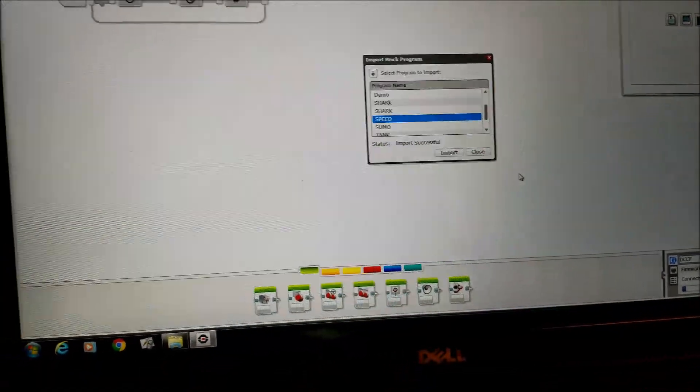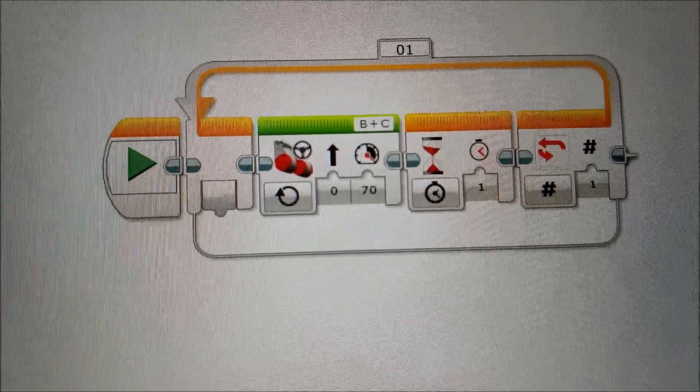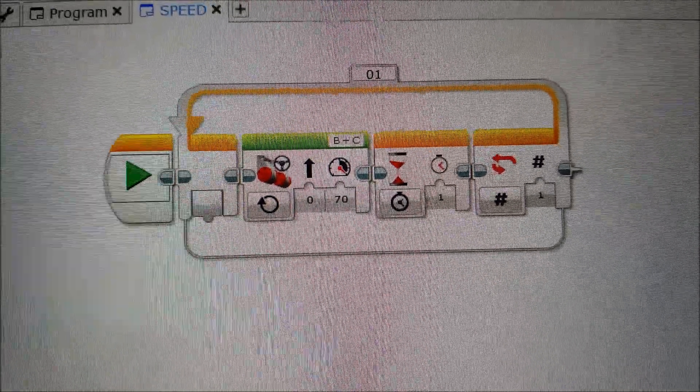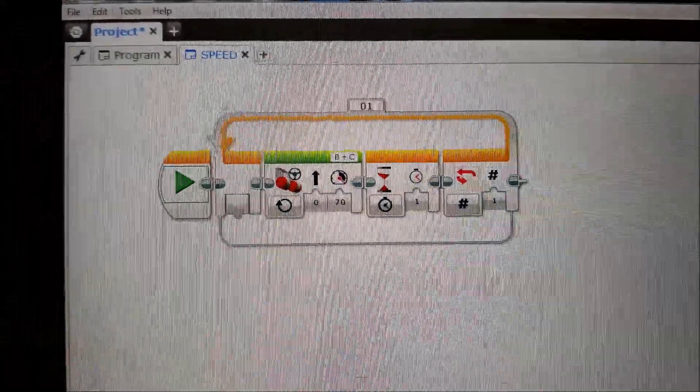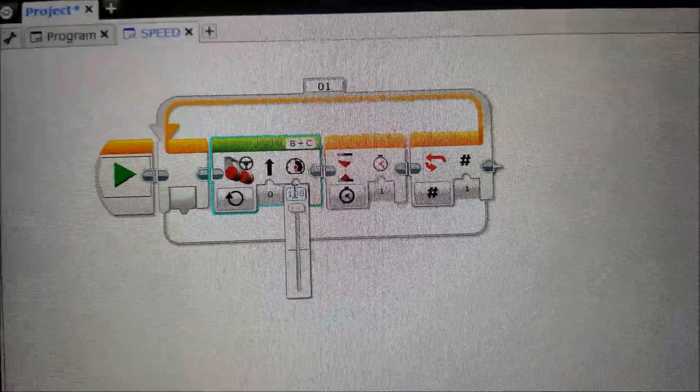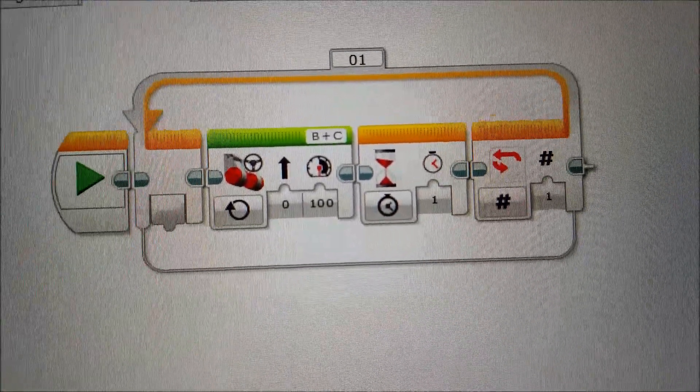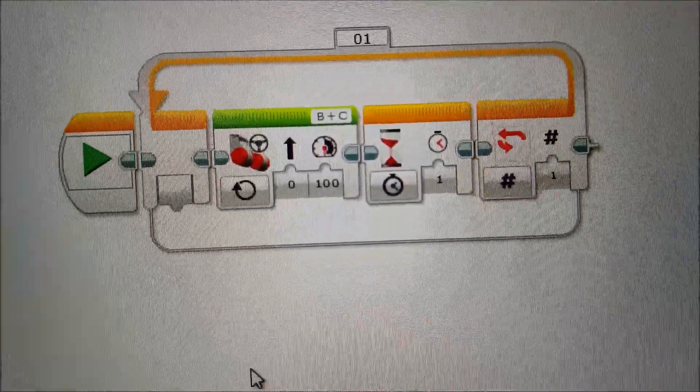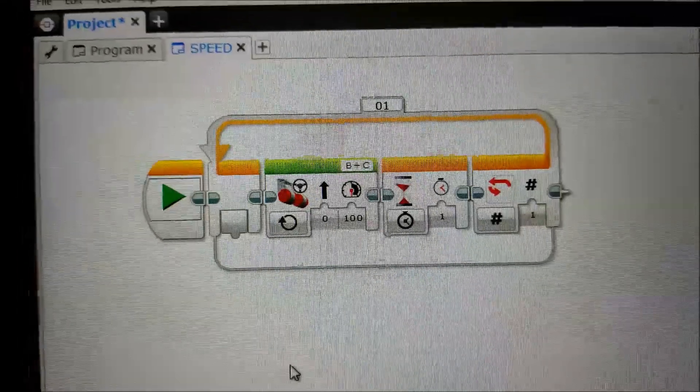Okay, and so there we go, there's the proof that brick speed is only 70%. So what I'm gonna do is bump this up to 100. There we go, 100% speed, and now I'm gonna take you through that same process that I did yesterday once I download this onto the brick.